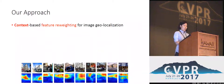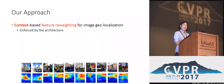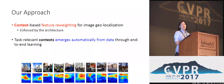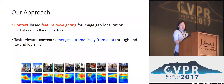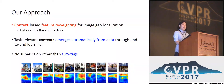Therefore, we propose to re-weight features based on the context. We design a CNN such that it is forced to assign weight based on the context, and take advantage of end-to-end learning such that task-relevant context emerges automatically from the data. Our training pipeline requires no supervision other than GPS tags.